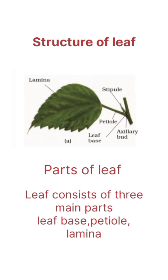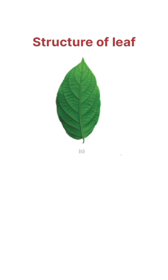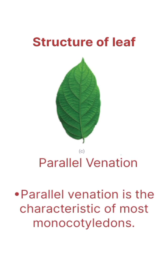Structure of leaf: 10. Parts of leaf — 3 main parts. Types of venation: 10. Reticulate venation. 11. Parallel venation.